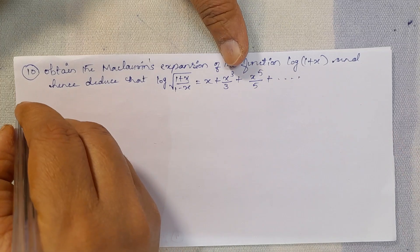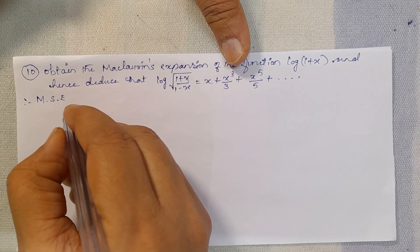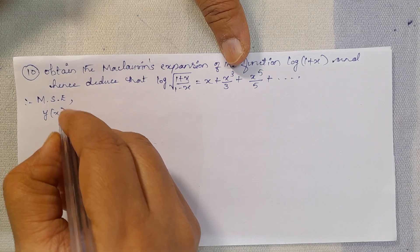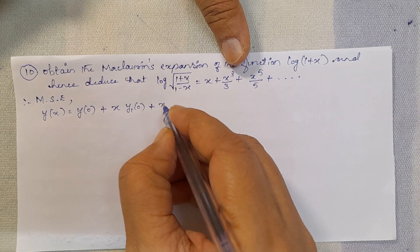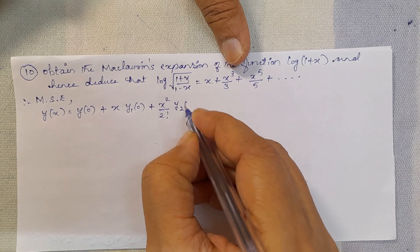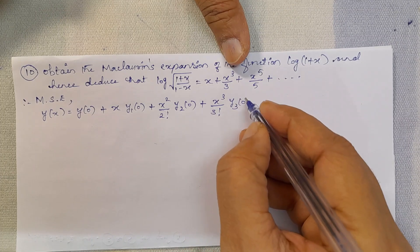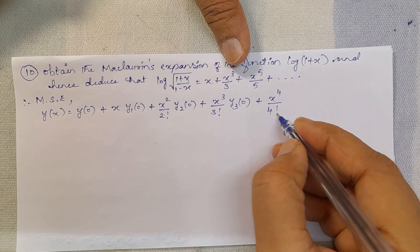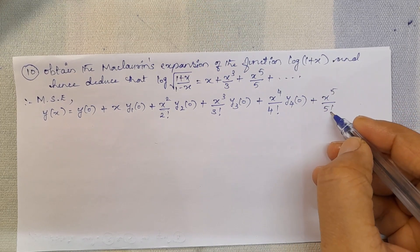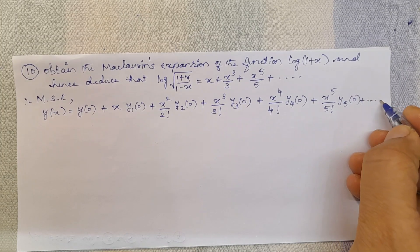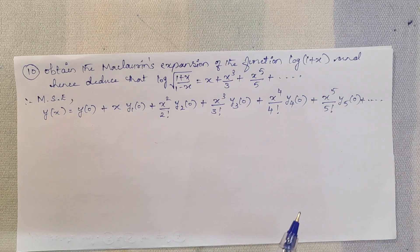Maclaurin's series expansion of y(x): y(x) = y(0) + x·y1(0) + x²/2! · y2(0) + x³/3! · y3(0) + x⁴/4! · y4(0) + x⁵/5! · y5(0) + etc.